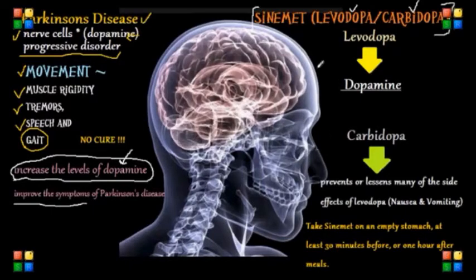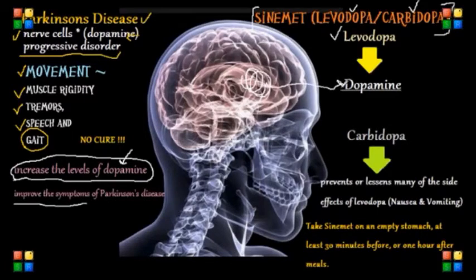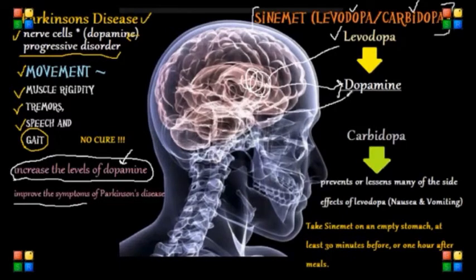Levodopa enters the brain and is converted to dopamine. It is transported to the nerve cells within the brain that produce dopamine, and it is then converted into dopamine for the nerve cells to use as a neurotransmitter.